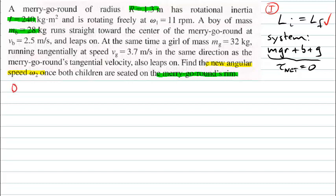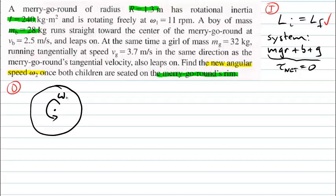Let's move on to the development stage. As usual, we'd like a diagram to help us understand what's physically going on. Here's our merry-go-round going around with some initial angular velocity. We know the radius of this merry-go-round. There's a boy running towards the centre of the merry-go-round, and there's a girl running tangentially to the rim in the direction that the merry-go-round is going. When they land, we can think of them as staying located just at the rim where they land, as implied by the question.